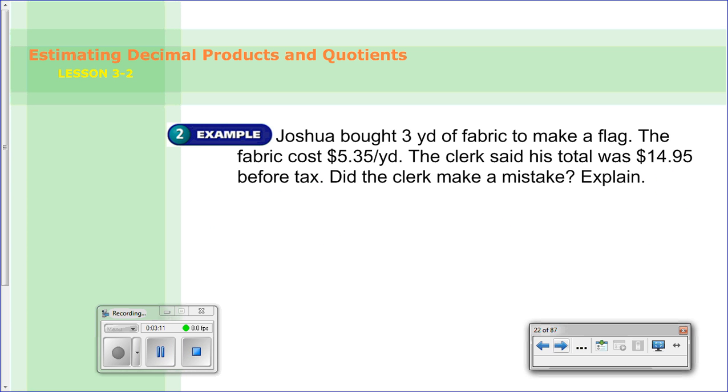So now we have a word problem of it. Joshua bought 3 yards of fabric to make a flag. The fabric cost $5.35 per yard. The clerk said his total was $14.95 before tax. Did the clerk make a mistake? Explain. So again, go ahead and do this one on your own.